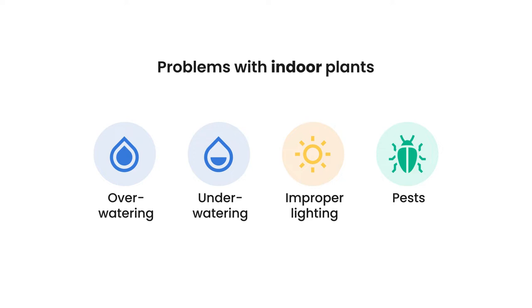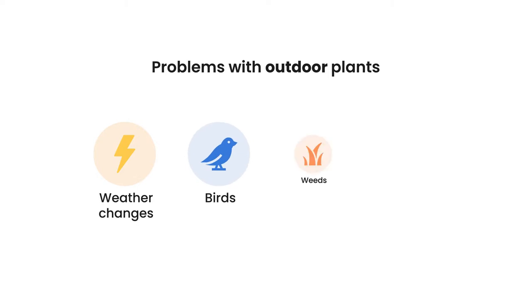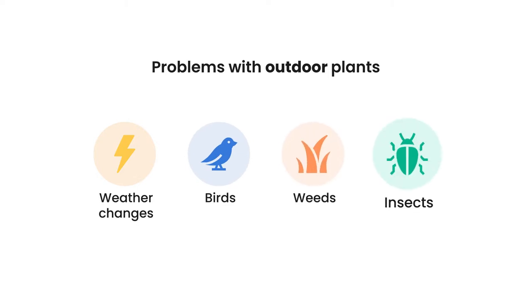In the case of outdoor plants, environmental factors come into play. This can be, for example, sudden changes in the weather, birds, weeds, and certain types of insects. This is why it is much more difficult to understand what exactly happened to your outdoor plant, as the environment is something that you do not have direct control over.